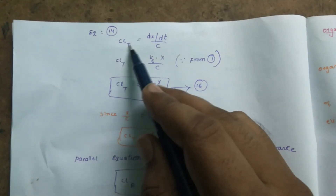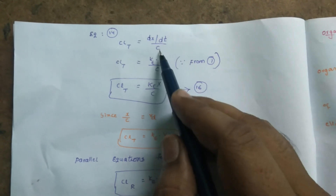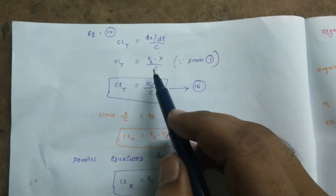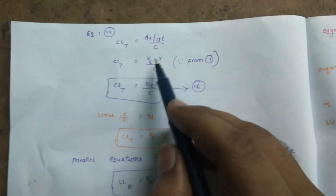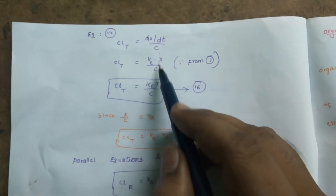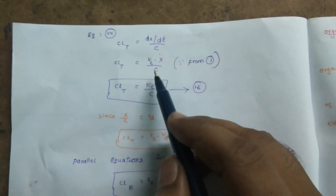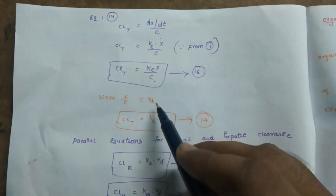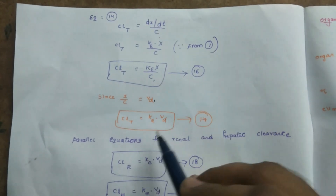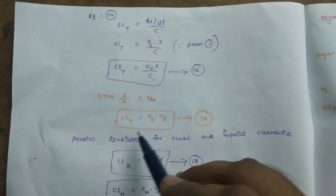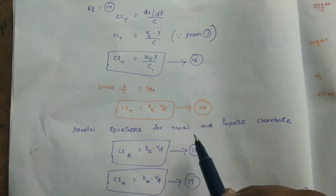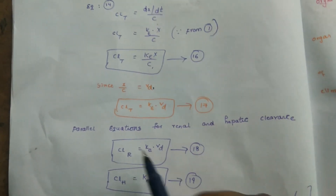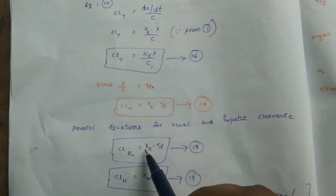Total clearance (CLt) equals dx/dt divided by C. Since dx/dt equals ke × X, and X/C equals volume of distribution (Vd), this transforms to: total clearance equals ke × Vd. Parallel equations apply for renal and hepatic clearance: renal clearance equals ke (excretion rate constant for urine) × Vd, and hepatic clearance equals km × Vd.